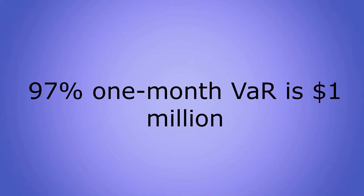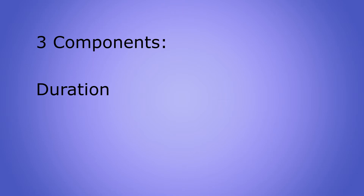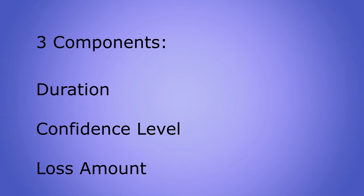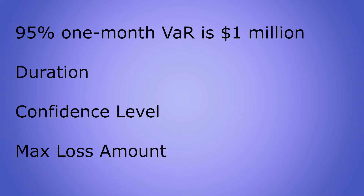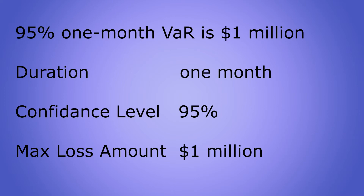In VAR, there are three main components. First is your duration or time period. Second is the confidence level. Third is your loss amount, which could be in dollar amount or percentage format. In our example, 95% is the confidence level, the time period is one month, and the loss amount is 1 million dollars.